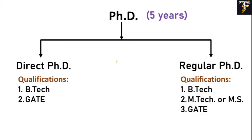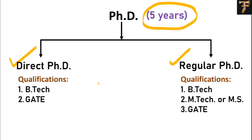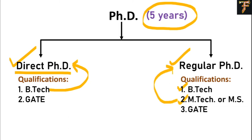PhD is a five-year degree. It is divided into two types: direct PhD and regular PhD. Direct PhD means after B.Tech you can directly apply for the PhD. On the other hand, regular PhD requires you to complete B.Tech followed by M.Tech or MS, and then apply for the PhD. That is the first difference between the two.